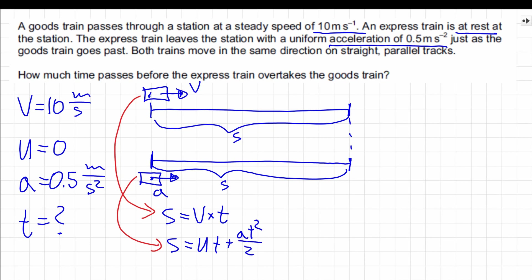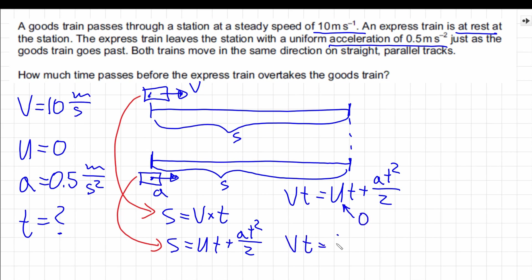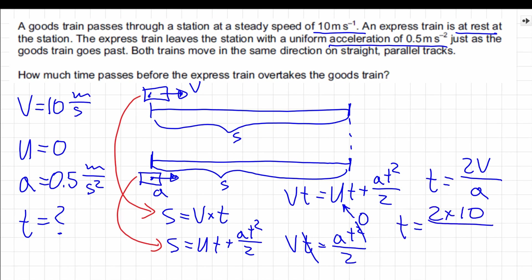By comparing these two equations, we get vt equals ut plus at squared divided by 2. Since the initial velocity of the accelerating train was zero, we get vt equals at squared divided by 2. After some algebra, we find that t equals 2v over a, which gives us a total time of 40 seconds.